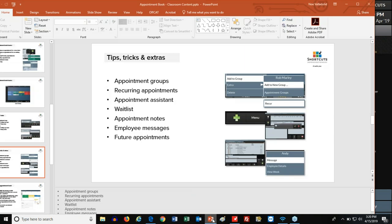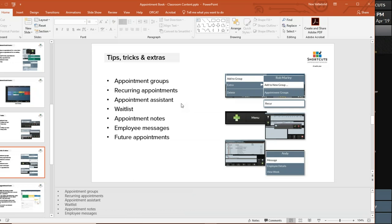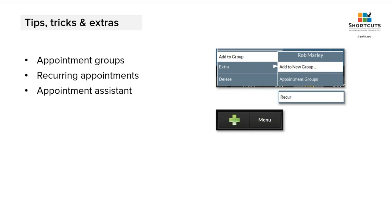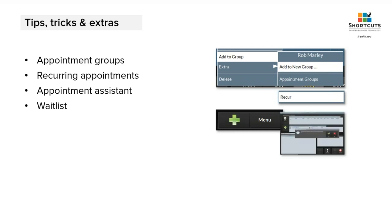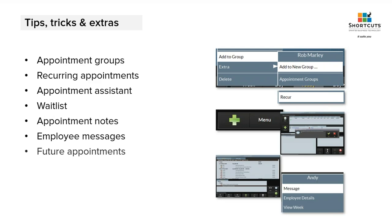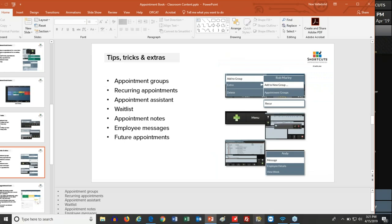Now we're going to talk about some tips, tricks, and extras. If you're working the front desk, or if you're a manager, there are some advanced appointment book features. How do you work with a group — for example, a wedding party or a family that comes in? How do you repeat appointments? If you have a regular customer who comes in every Friday for a blowout, how do you set up a standing appointment? How does the appointment assistant work? What about the wait list? How does the staff leave notes or record messages? Let's go into Shortcuts and do just that.